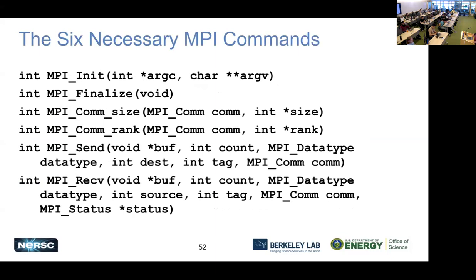Now we're going to talk about the six MPI commands you need to write any parallel program. They are: MPI_Init, MPI_Finalize, MPI_Comm_Size, MPI_Comm_Rank, MPI_Send, and MPI_Recv. We're going to go over these in pairs.